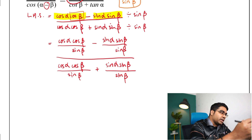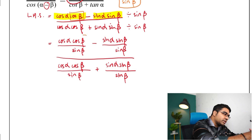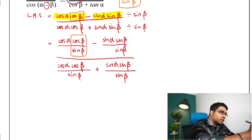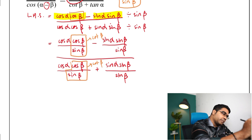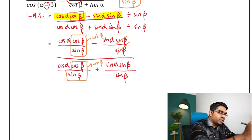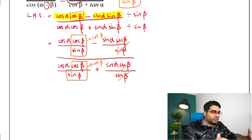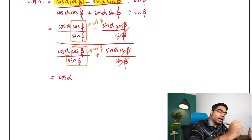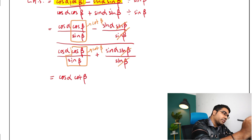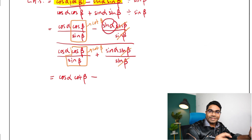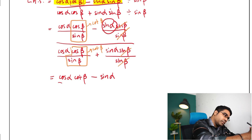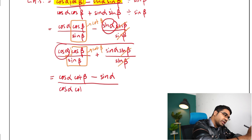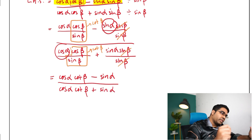Now we simplify. The term cos(β)/sin(β) is cotangent β, so we've obtained cotangent β in both the numerator and denominator. The sin(β)/sin(β) terms cancel to give 1, so what remains is: cos(α)·cot(β) minus sin(α) in the numerator, and cos(α)·cot(β) plus sin(α) in the denominator.